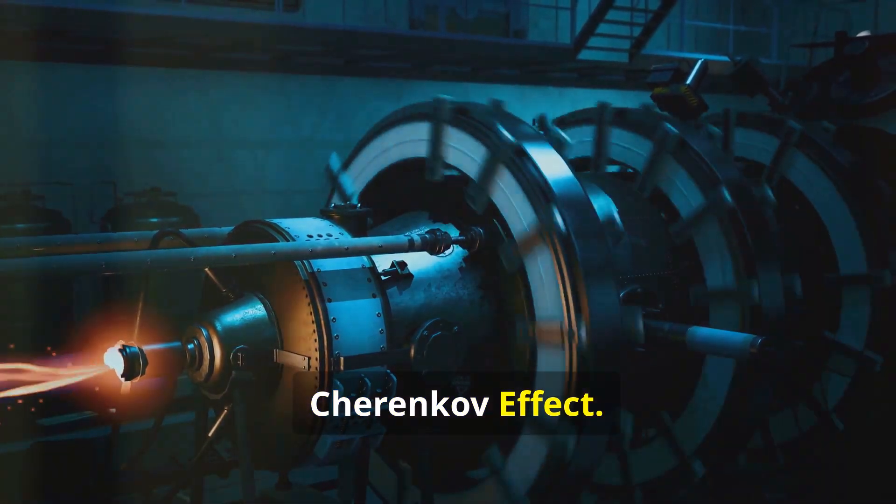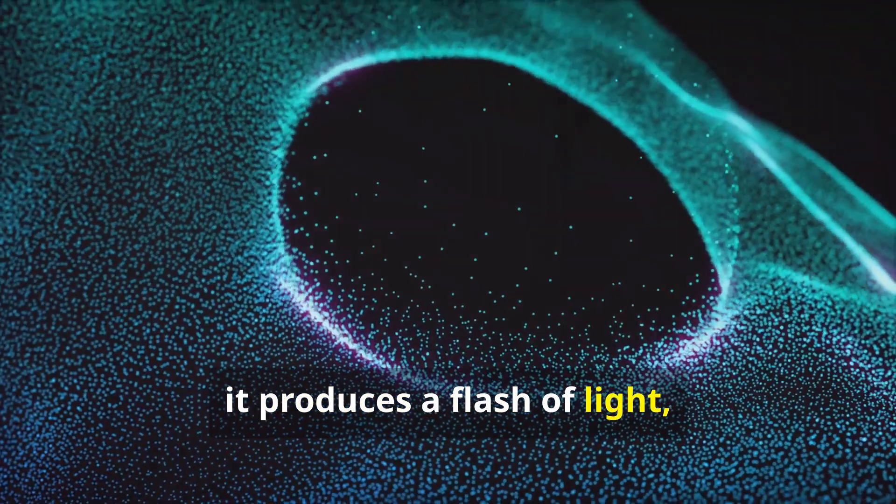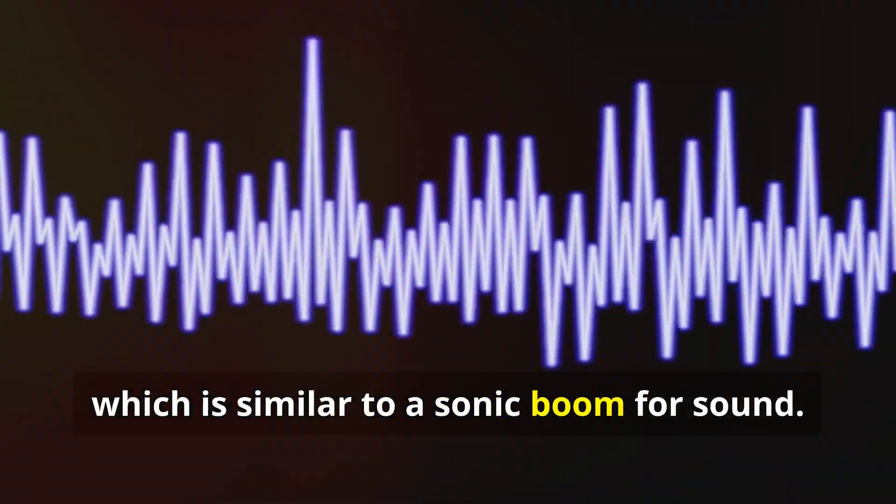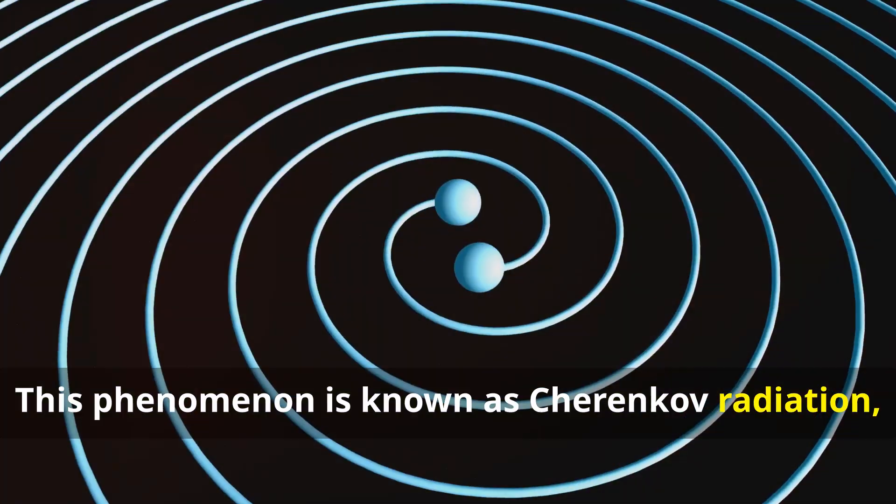If a particle exceeds the speed of light within a material, it produces a flash of light, which is similar to a sonic boom for sound. This phenomenon is known as Cherenkov radiation, and it's used by scientists to detect neutrinos.